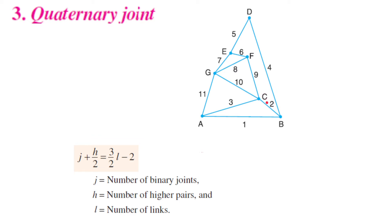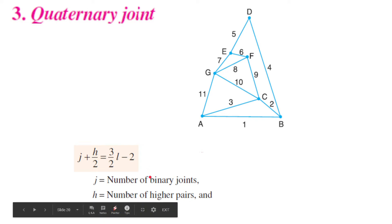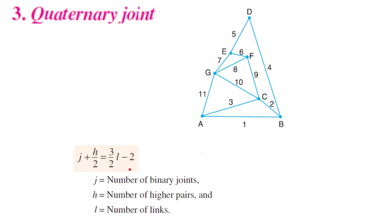Joint c also makes a tertiary joint. For a quaternary joint, four links are connected at the same connection — at point c, links 2, 9, 10, and 3 are all connected, making it a quaternary joint. Point g makes a tertiary joint, point f a tertiary joint, point e also a tertiary joint, and point d makes a binary joint. There is one relation which defines the constraint level of the joints: j + h/2 = 3/2 · l − 2.